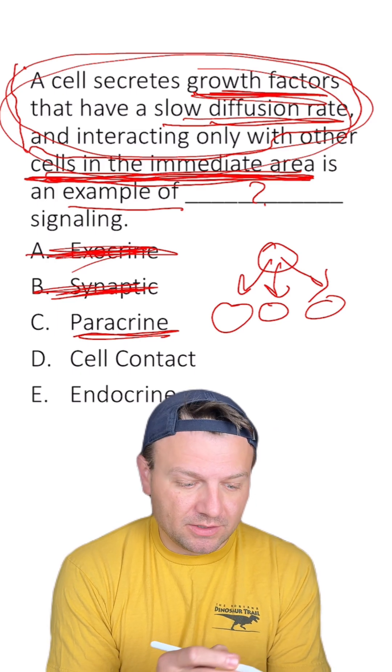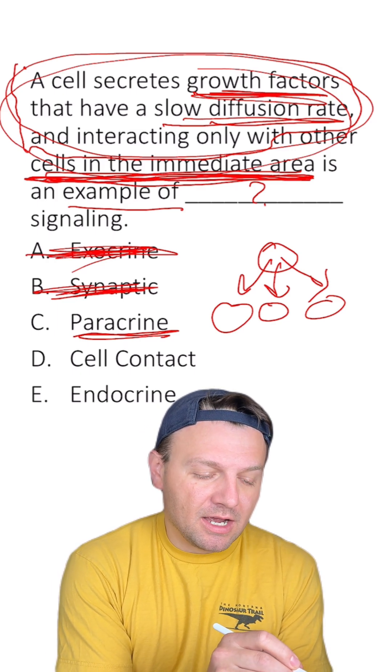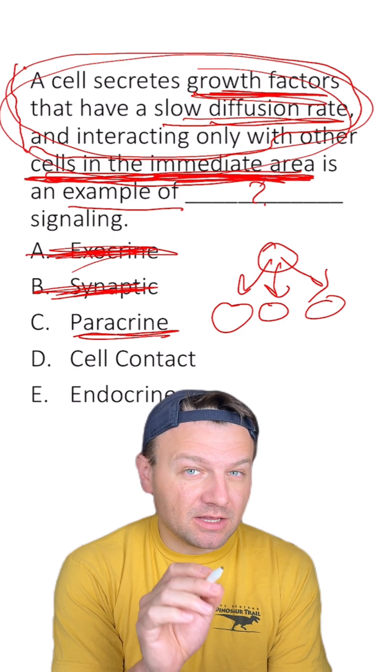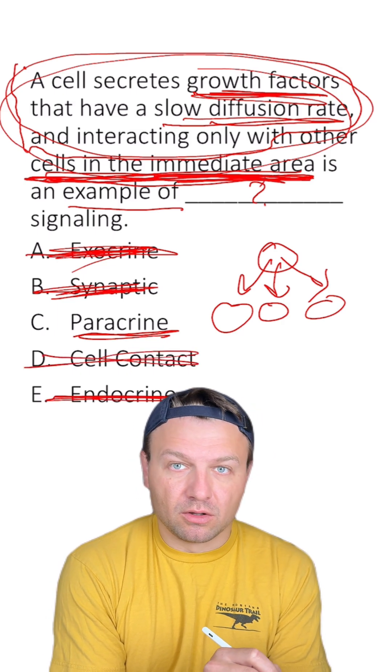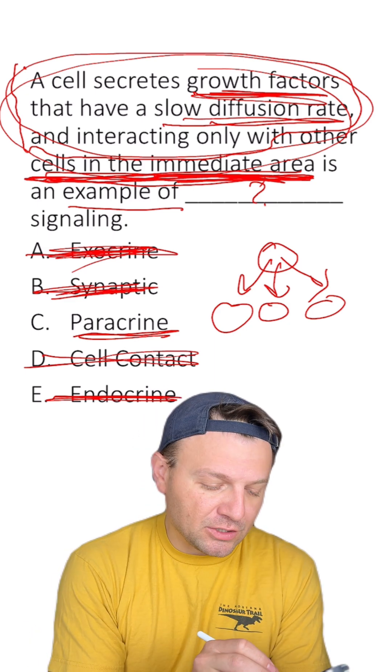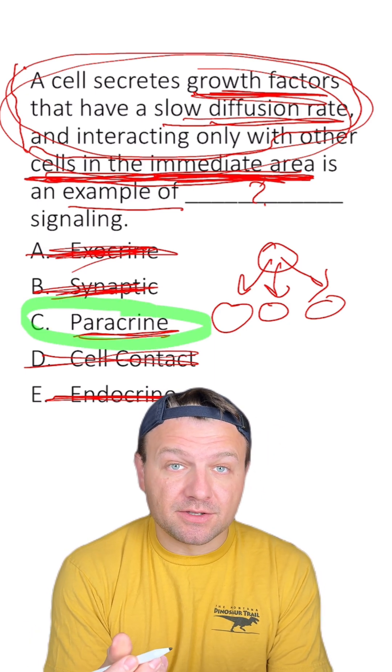Cell contact? No, cells aren't in contact. They say that the cells are in an immediate area, but they're not saying they're actually contacted with each other. So that's out. Endocrine is long distance communication. So that's definitely not it. That's why C is the right answer.